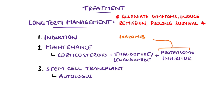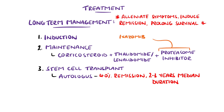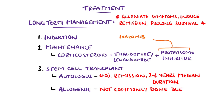With these, 40% of patients go into complete remission, but the median duration is only 2–3 years. Allogeneic stem cell transplants use stem cells from other donors and may increase disease-free survival in some cases, but are not commonly done due to a high rate of transplant-associated mortality.